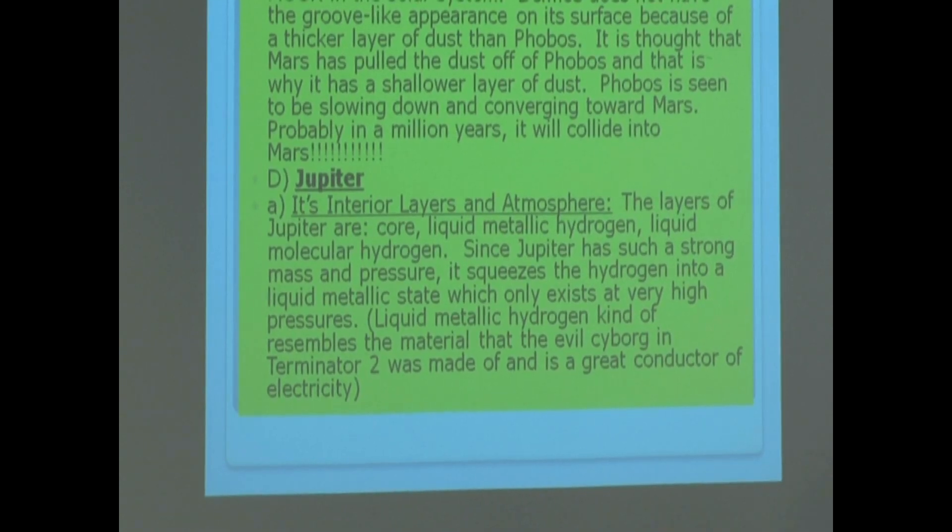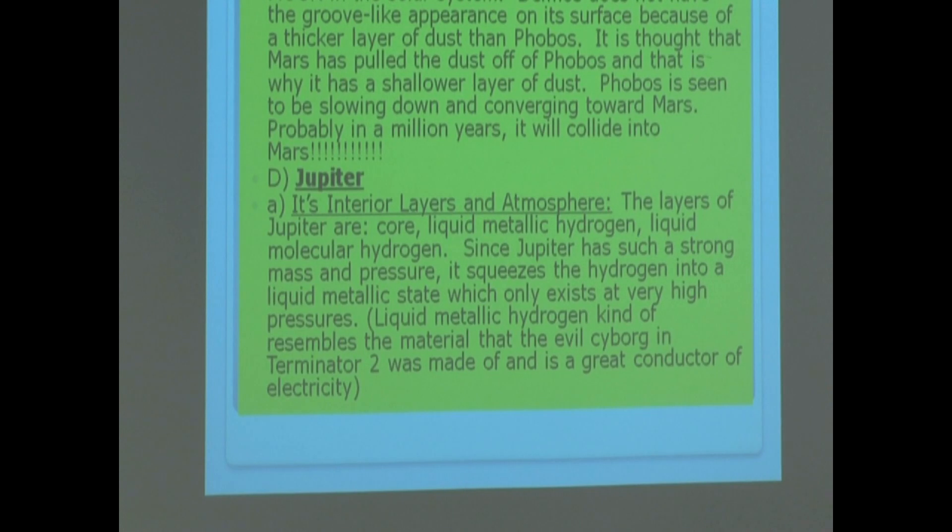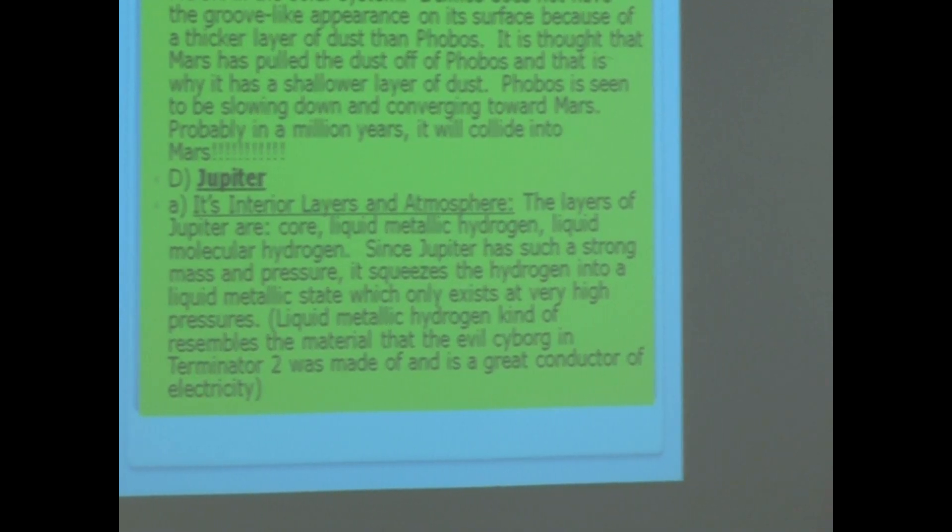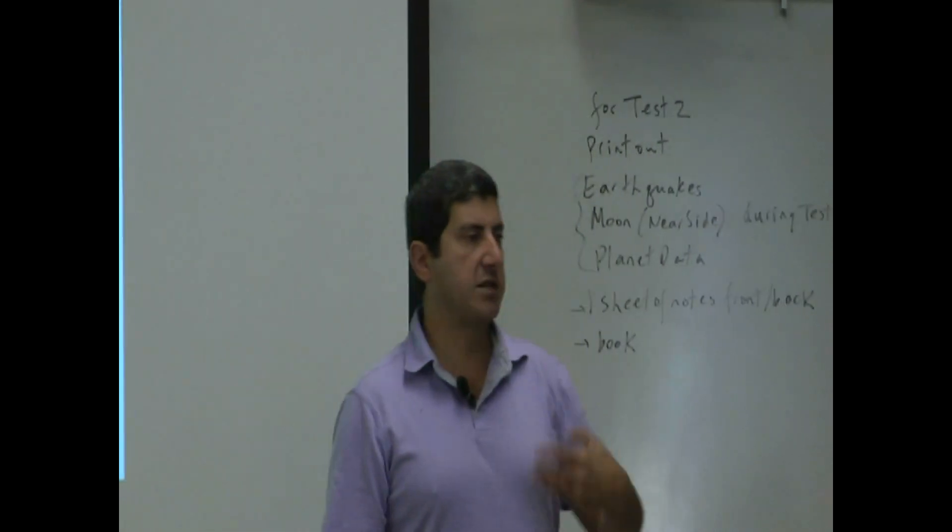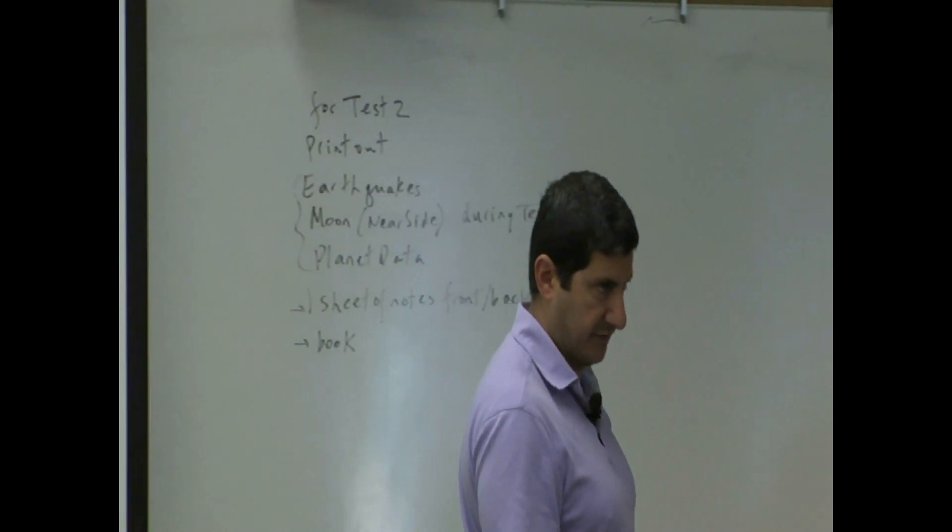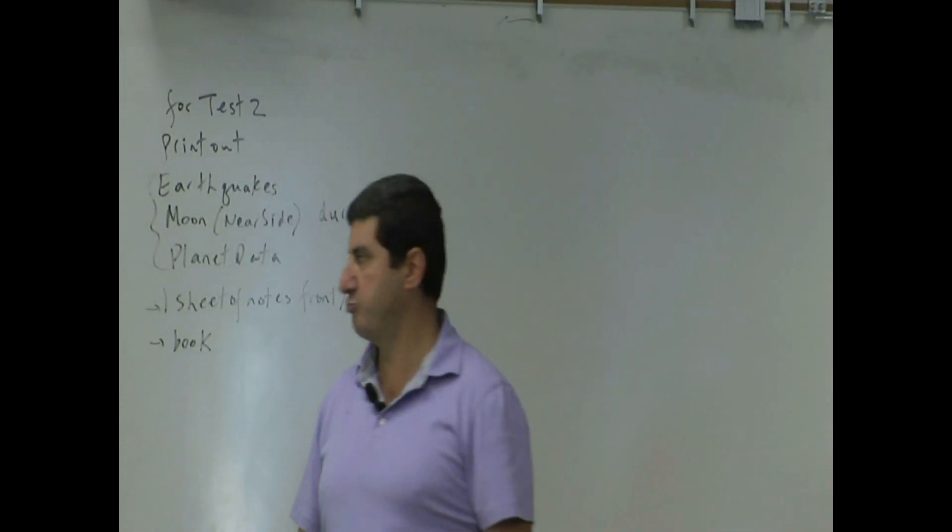Metallic and molecular. Since Jupiter has such a strong mass and pressure, it squeezes the hydrogen into a liquid metallic state, which only exists at very high pressures. And the hydrogen becomes electrically conductive. That's why it's called metallic hydrogen.